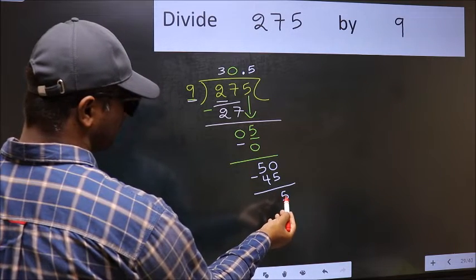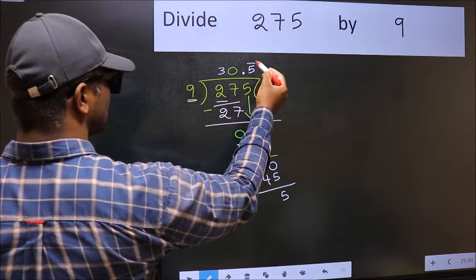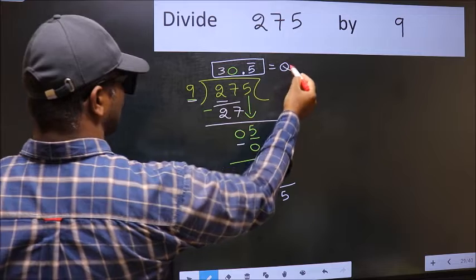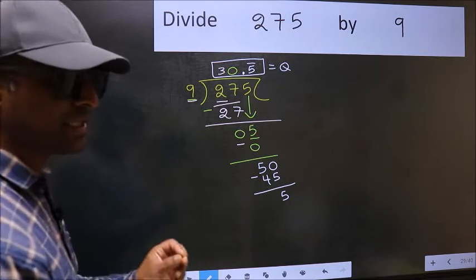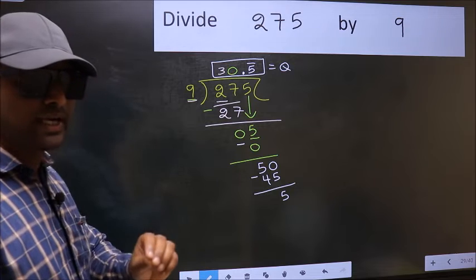We got 5 again. That means we get bar on this number. So this is our quotient. Did you understand where the mistake happens? You should not do that mistake.